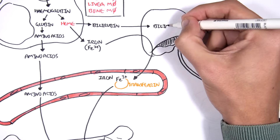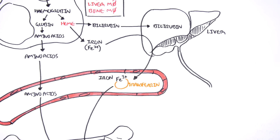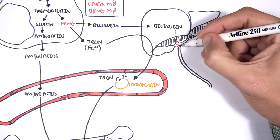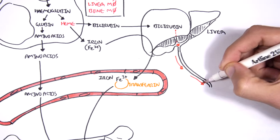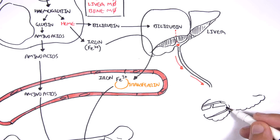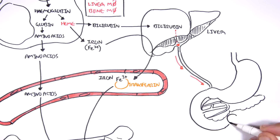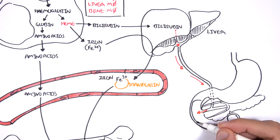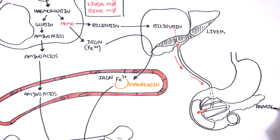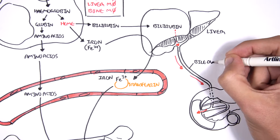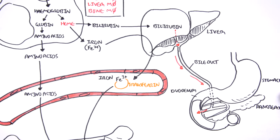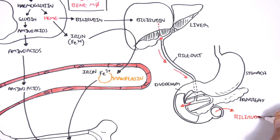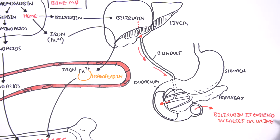Bilirubin goes back to the liver, either through an albumin transporter or otherwise. Bilirubin ends up in the liver, where it has a few fates. Most of the time, bilirubin is secreted or excreted through the bile system. Bilirubin will enter the bile and then be secreted into the duodenum of the small intestine through the bile duct. It is then excreted in feces, or it is reabsorbed and excreted in urine.